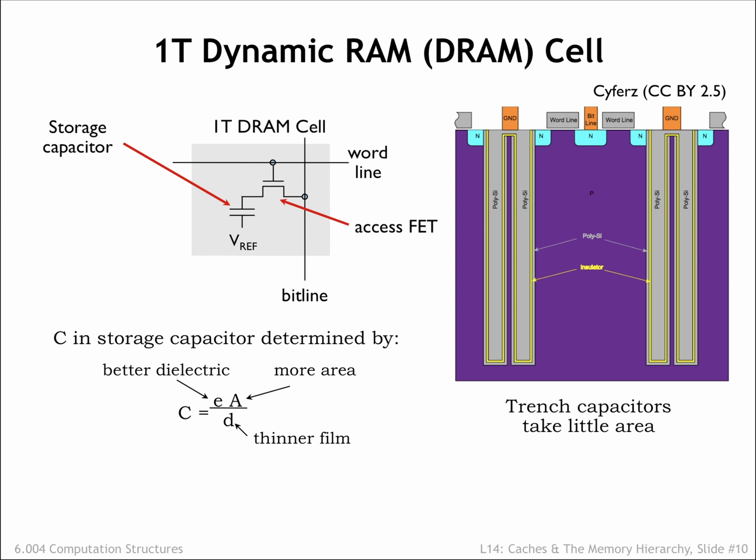A cross-section of a modern DRAM cell is shown here. The capacitor is formed in a large trench dug into the substrate material of the integrated circuit. Increasing the depth of the trench will increase the area of the capacitor plates without increasing the cell's area. The word line forms the gate of the NFET access transistor connecting the outer plate of the capacitor to the bit line. A very thin insulating layer separates the outer plate from the inner plate, which is connected to some reference voltage, shown as ground in this diagram.